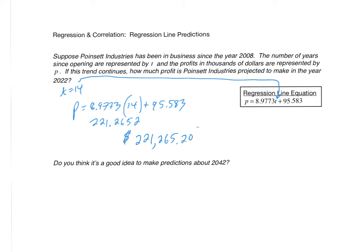So this is our answer. The predicted amount of money — again, that's not guaranteed by any means — but the predicted amount of money that they're going to profit in 2022 is $221,265.20.